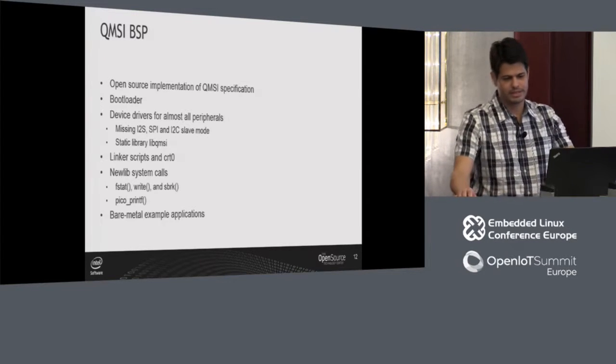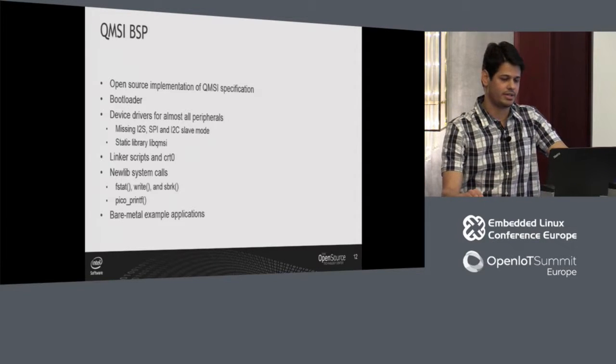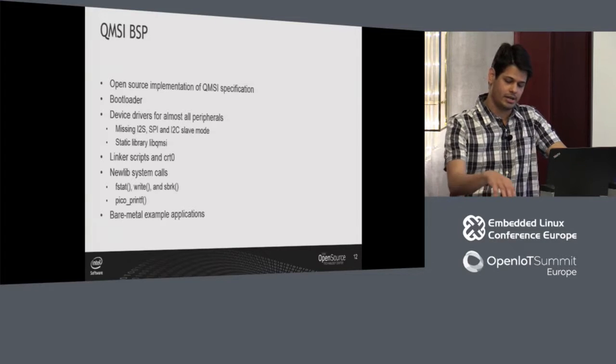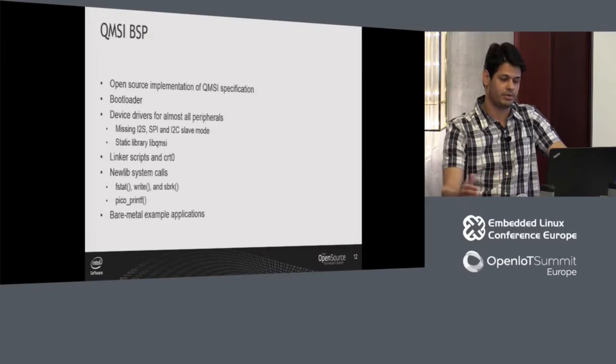The bootloader handles very low-level setup for the x86, such as setting up the GDT, transitioning to 32-bit protected mode, enabling cache, and all this low-level initialization. The bootloader also offers high-level features such as firmware management. It runs on the OTP flash, not the system flash.